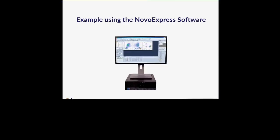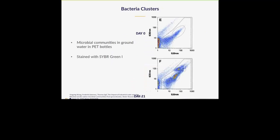Another type of analysis is monitoring bacterial growth over time. In this example, groundwater was placed into PP or PET bottles and left for 21 days at 25°C, then stained with SYBR Green. At day zero, you can see low nucleic acid and high nucleic acid populations on the dot plot. After 21 days in the PET bottles, there is clearly growth in the bacteria, and different clusters of groups are visible, showing that different microbial communities have developed and grown within the PET bottle.